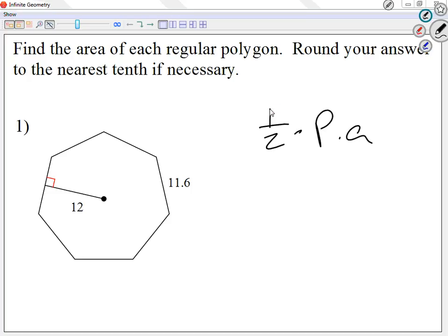So, the formula was one half times perimeter times apothem. If I said that we were going to do one half times perimeter times apothem, so one half in a calculator, I'm going to call it 0.5. The perimeter for this case, I know that there are seven sides. Each side is 11.6. So my perimeter should be 11.6 times 7.